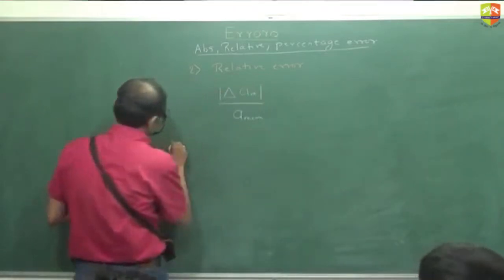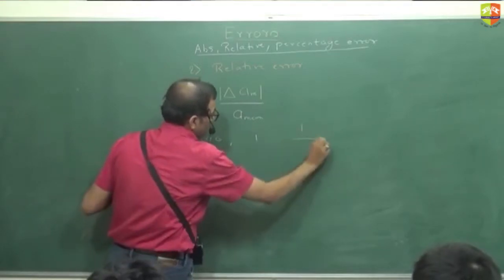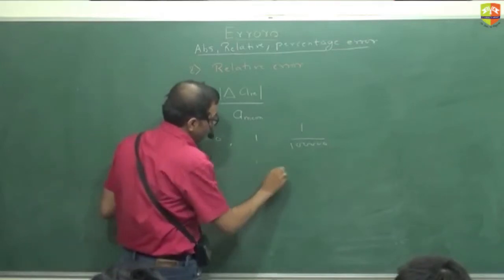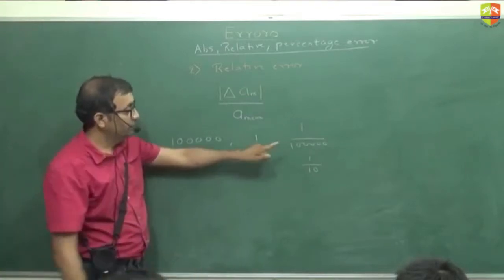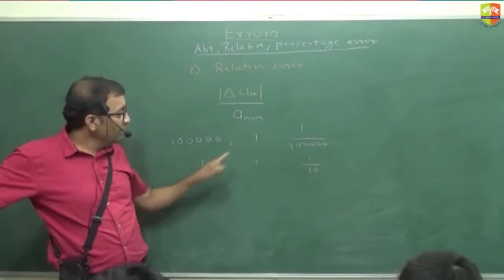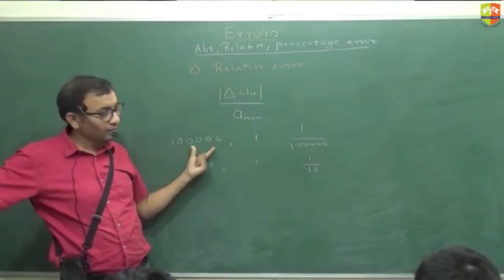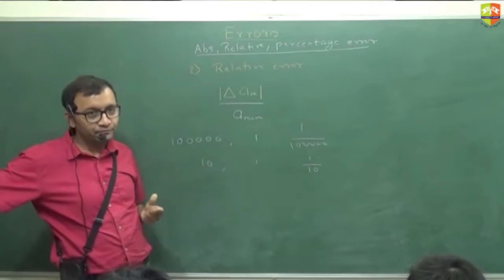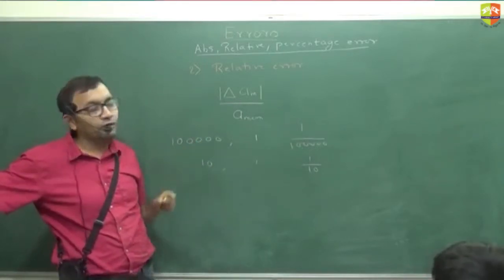Let's write down this example. If you are measuring one lakh and error is one, relative error is one divided by one lakh. If you are measuring one by ten, clearly this is a lot lesser. You can't compare one with one — this error is for the measurement of one lakh, this error is for the measurement of ten. Of course one is more accurate, but we should also know how to quantify it. This is how we quantify.